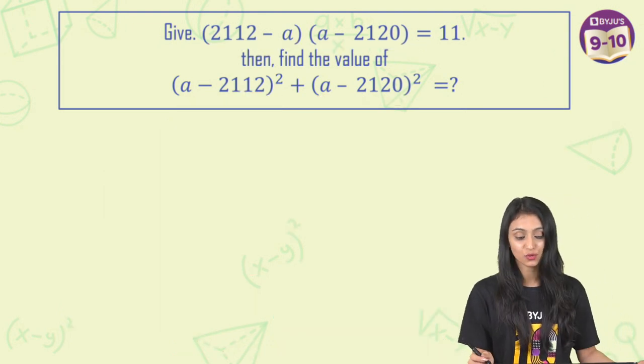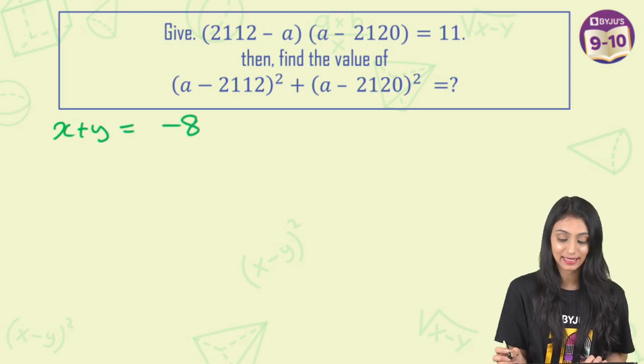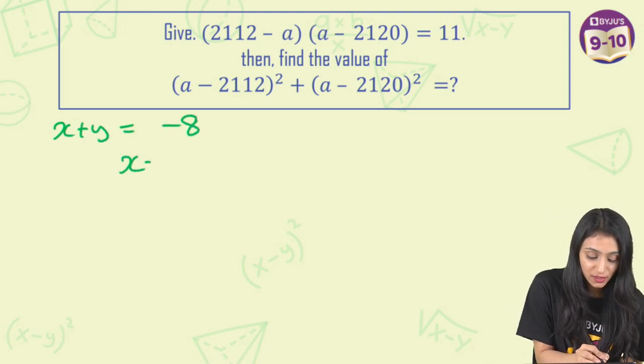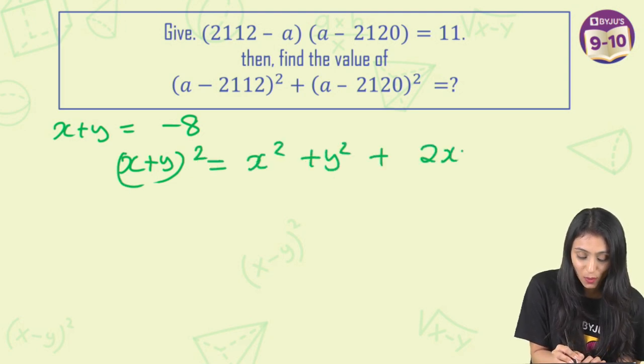Now, all we need to do is, we have got the value of x+y, that's going to be minus 8. Let's put it here in the equation, that is (x+y)² equals x²+y²+2xy.